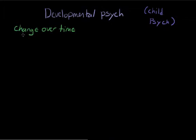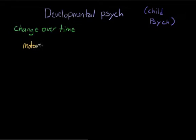The topic of developmental psychology is extremely broad, but there are a couple of things that developmental researchers typically focus on. The first is motor skills — things like how do we go from crawling to walking, how do young children learn how to grasp things, and how does coordination change over our lifespan?